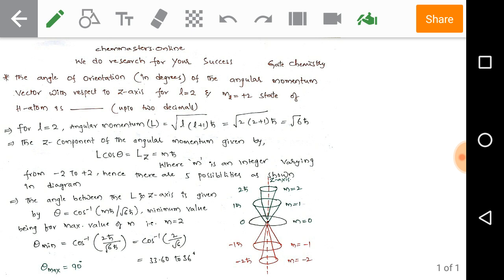Now we are discussing gate previous year solved problems. Just look at the given problem. The angle of orientation we need to calculate in degrees of the angular momentum vector with respect to Z-axis for L equals 2 and ML equals plus 2 state of the hydrogen atom. We need to calculate up to two decimals.